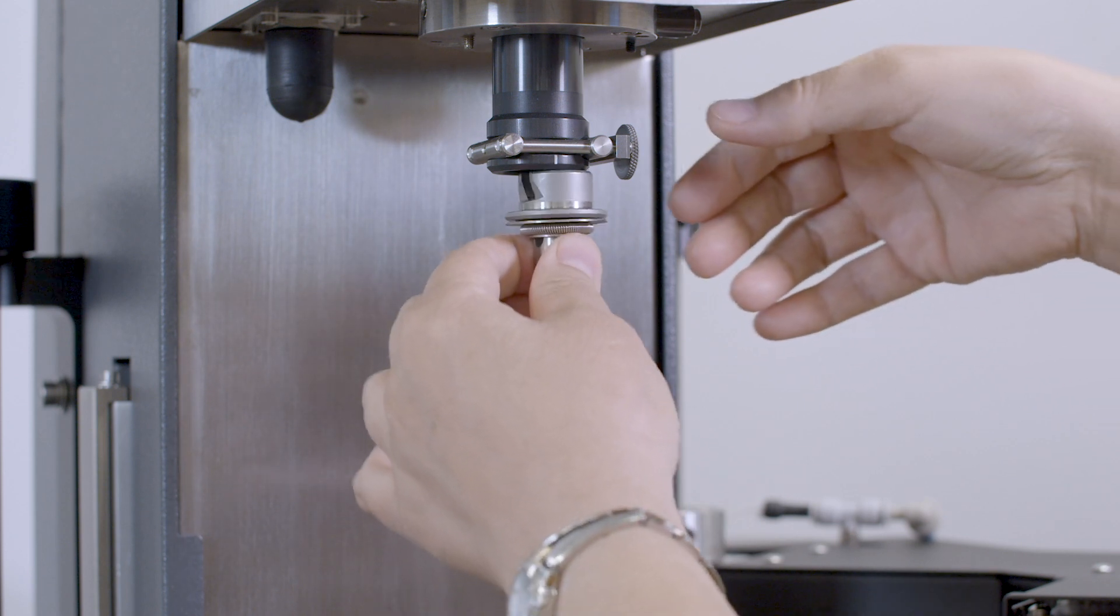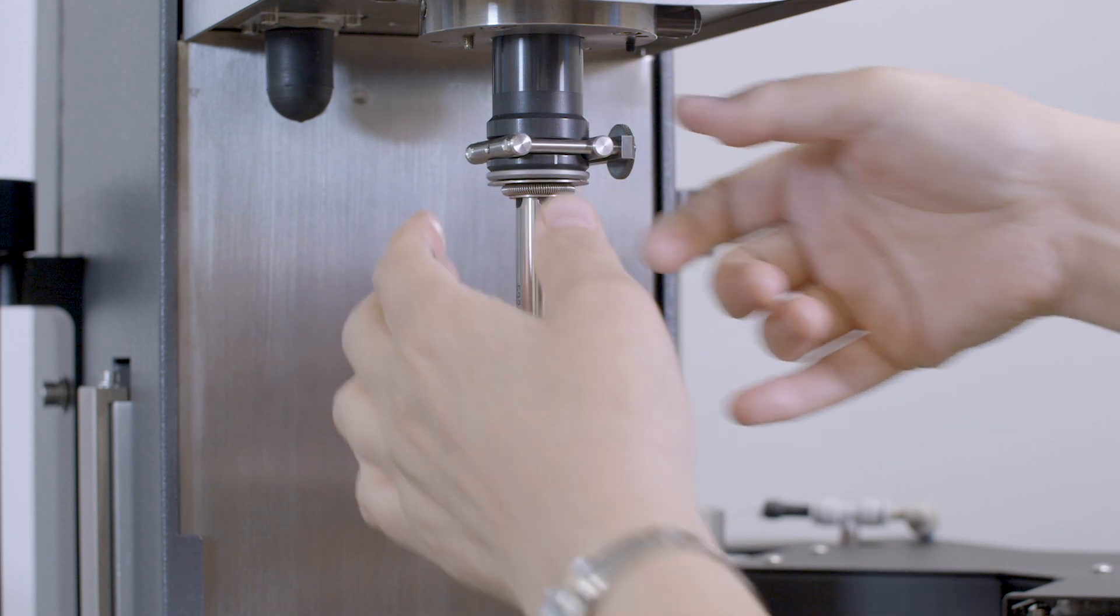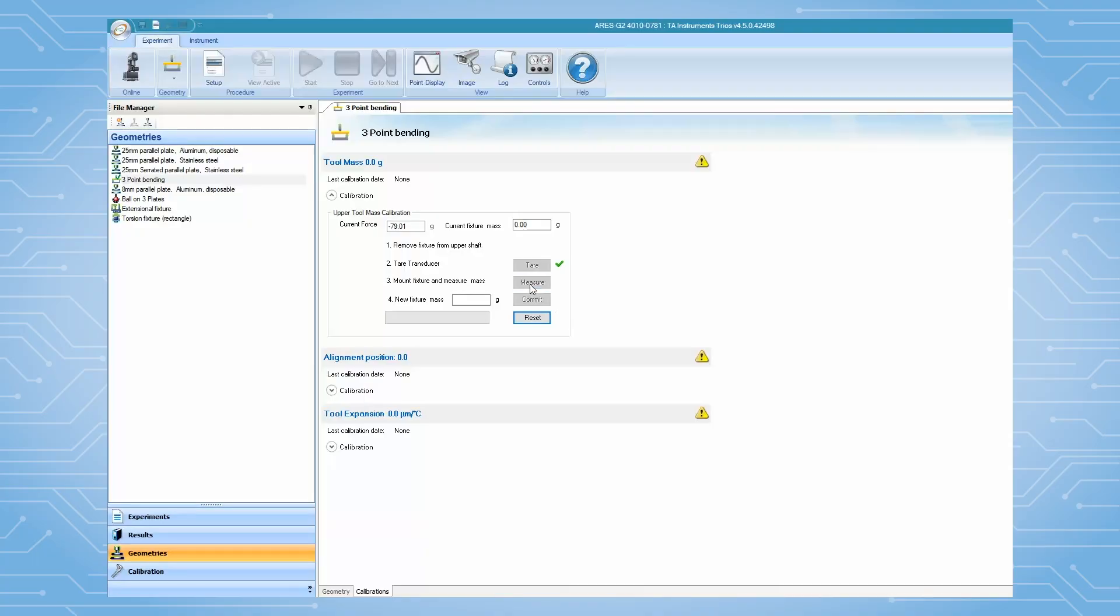Measure the mass of the upper tool, then click on Commit to complete the two mass calibration.